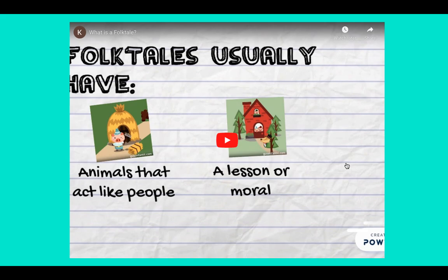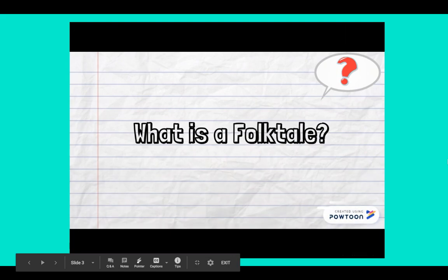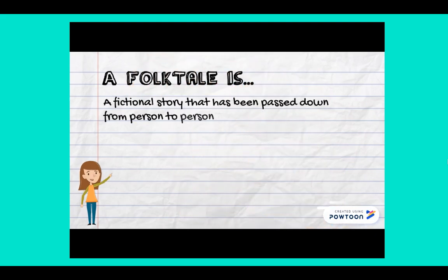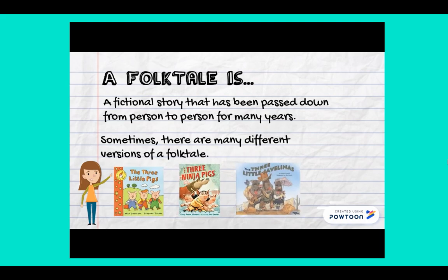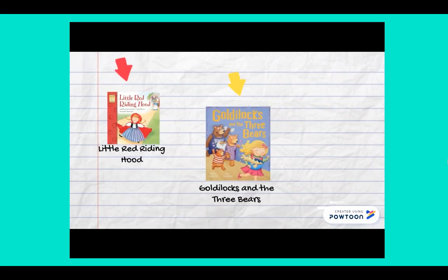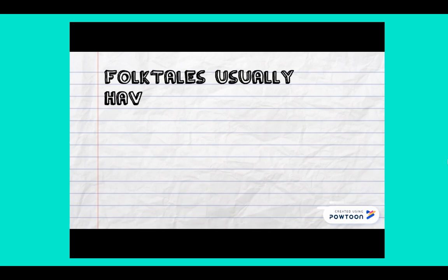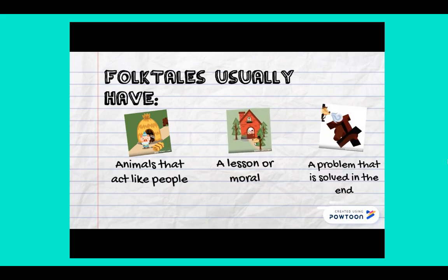It's specifically something called a folktale, and this video tells us a little about folktales. A folktale is a fictional story that has been passed down from person to person for many years. Sometimes there are many different versions of a folktale. You may have read these folktales before: Little Red Riding Hood, Goldilocks and the Three Bears, and The Three Little Pigs. Most folktales usually have animals that act like real people, a lesson or moral, and a problem that gets solved in the end.